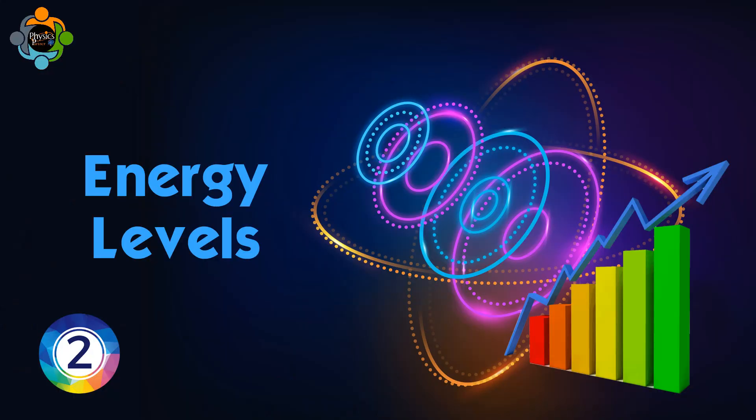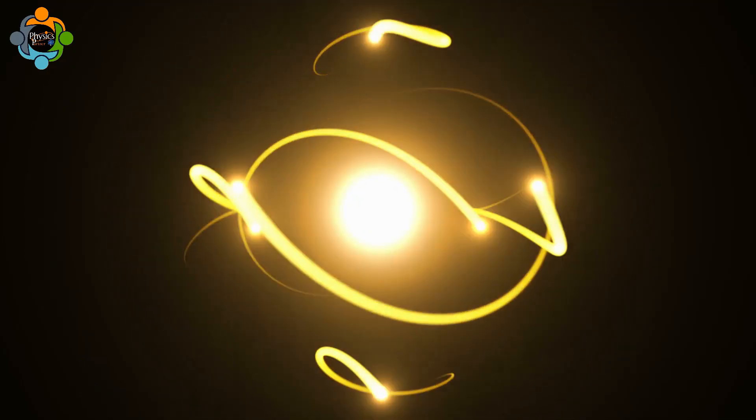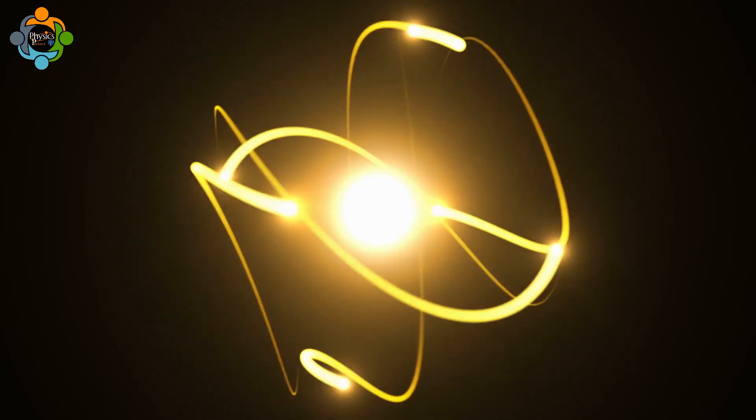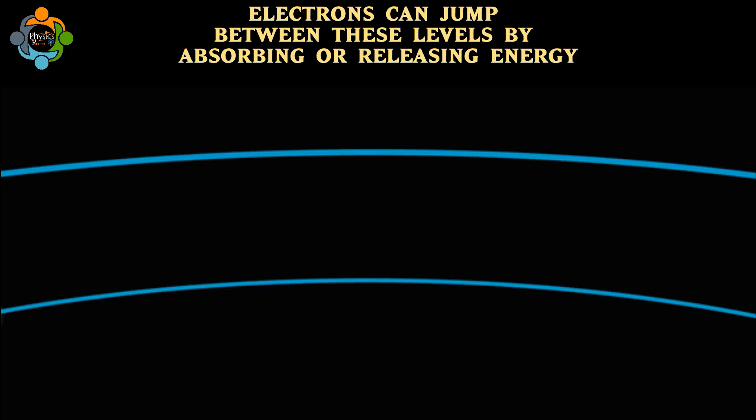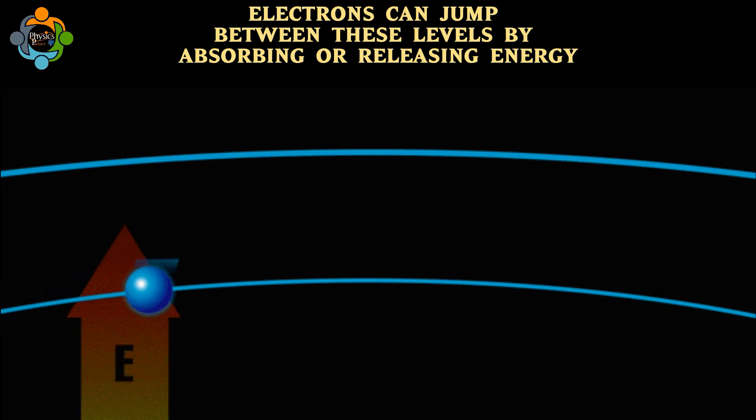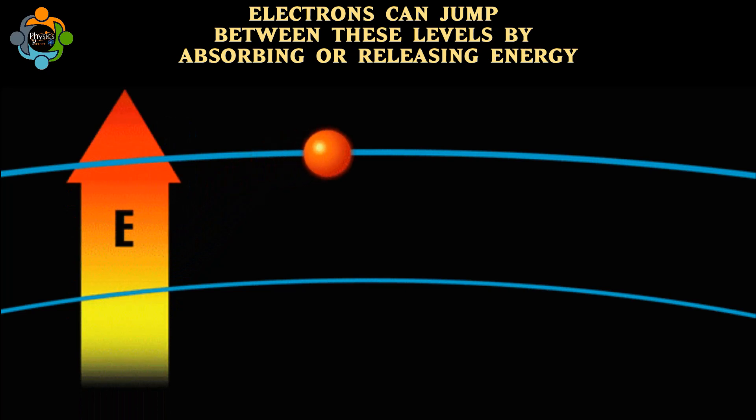Number two is energy levels. Electrons in an atom occupy specific energy levels. Think of these as different floors in an apartment building. Electrons can jump between these levels by absorbing or releasing energy, kind of like taking an elevator.